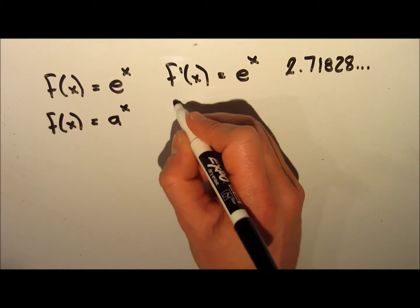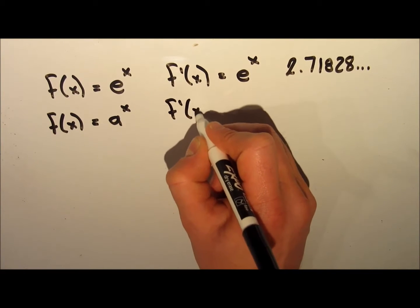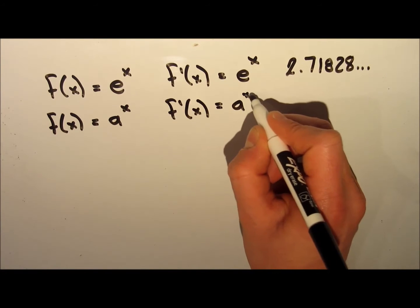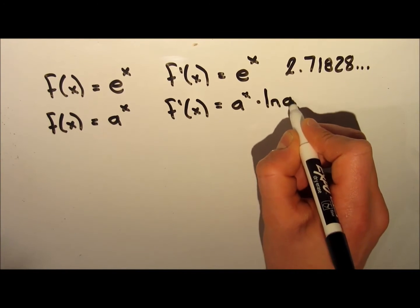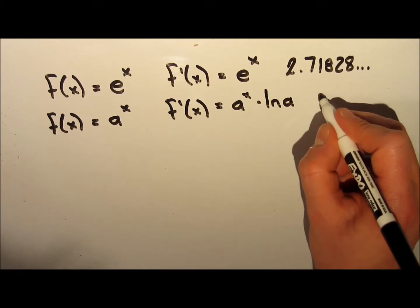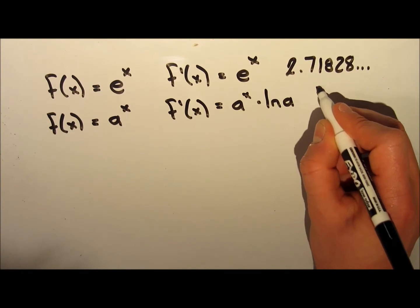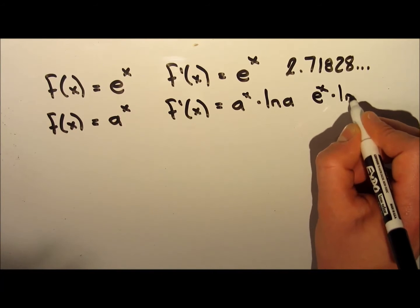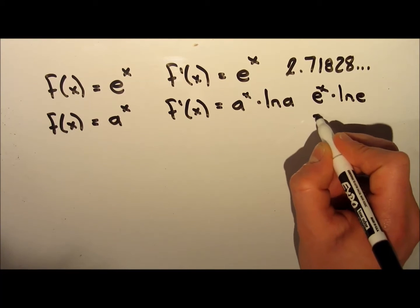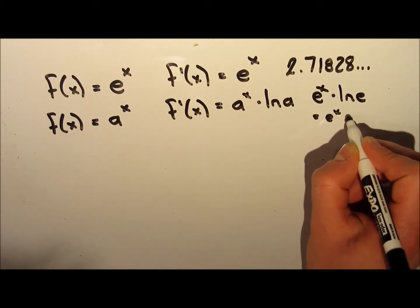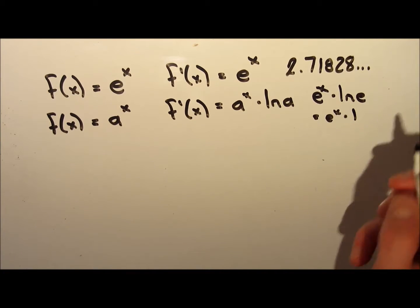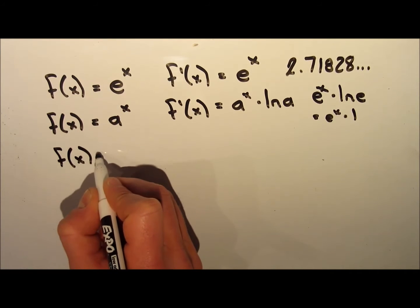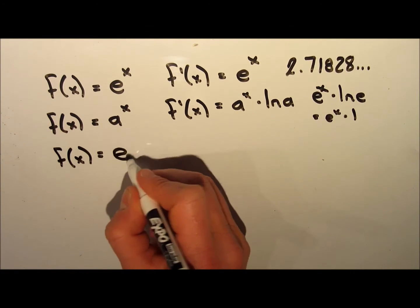The next example is f(x) = aˣ. The derivative of this is aˣ multiplied by ln(a), where a is just any constant — could be 1, 2, 3, 4, could be anything. This actually makes sense when we look at our first example, because if we take our constant as e, it would be eˣ multiplied by ln(e). And we know that ln(e) is just 1, so that gives us our original eˣ.